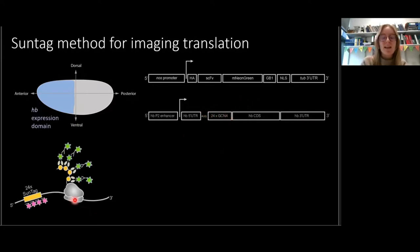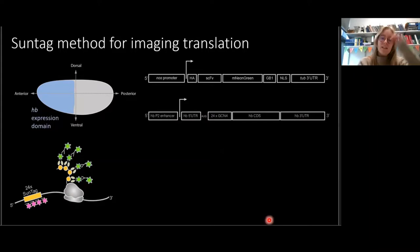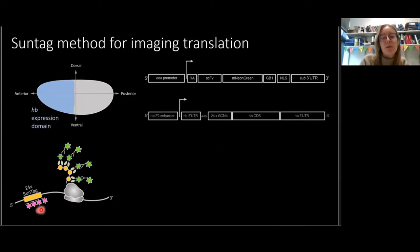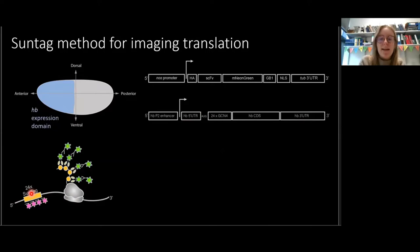As a reminder, as these GCN4 peptides are translated, they will be bound by the single-chain antibody with the neon green. For fixed imaging, we used single molecule FISH against the SunTag sequence to identify individual mRNAs, and we also used an antibody against the neon green.